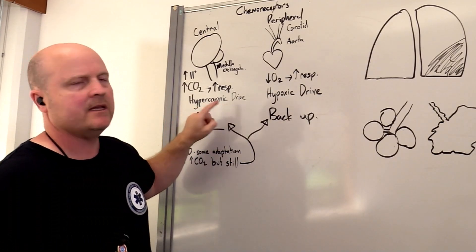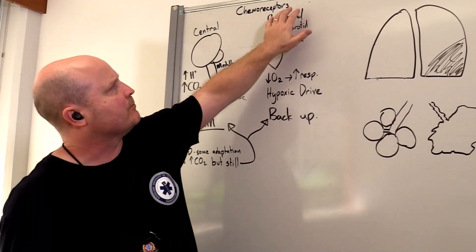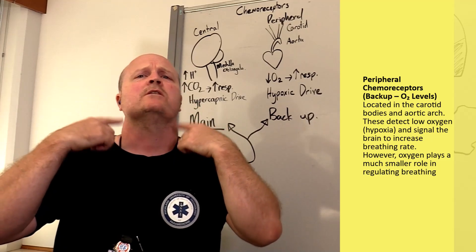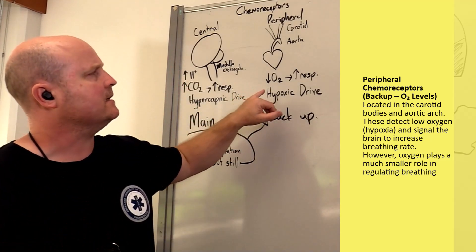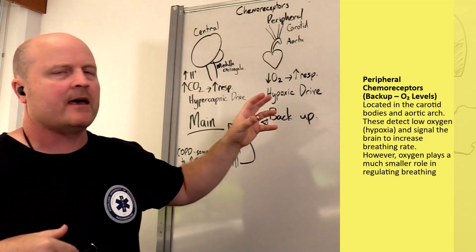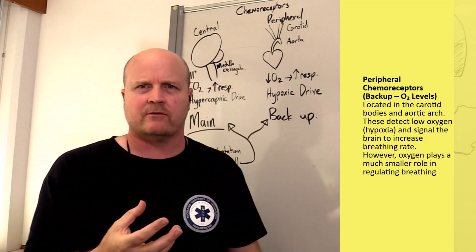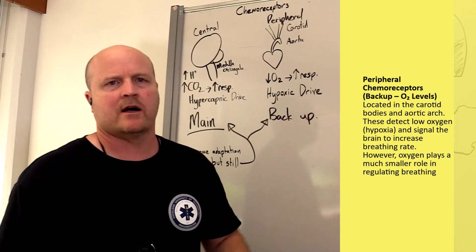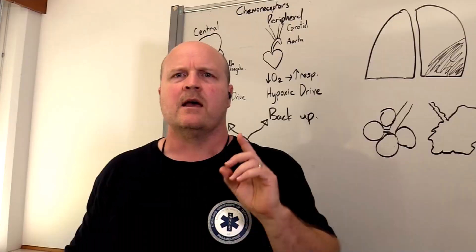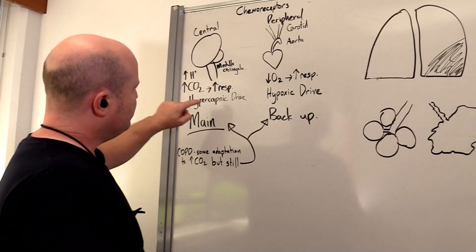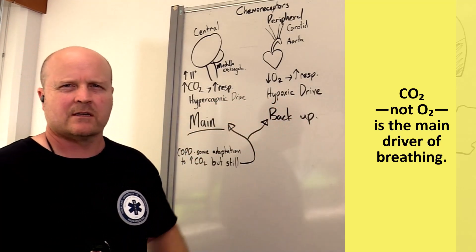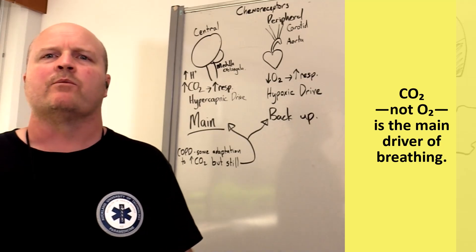That's our hypercapnic drive. Then we have peripheral chemoreceptors in our aorta and our carotids, and they sense when our oxygen levels are getting too low and top up our respiratory drive — that's our hypoxic drive. In a normal human being, not COPD, our main driver is the hypercapnic drive, and hypoxic is just our little backup.